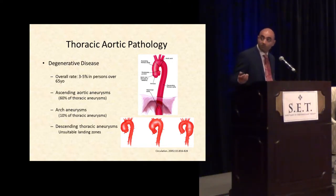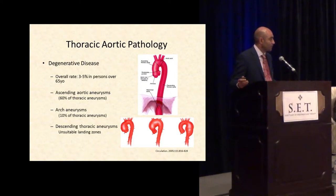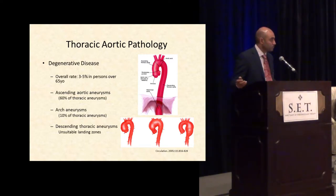Most of these patients — the majority — will have ascending or arch aneurysms. It's about 70 percent of all thoracic aneurysms. And after that, if you add on the people who have technically a descending aneurysm but with a marginal or unsuitable proximal landing zone, you're talking about a lot of patients who are going to have this problem in the next upcoming decades.